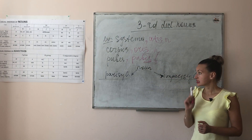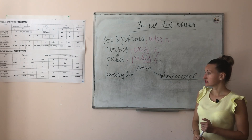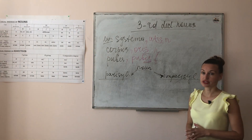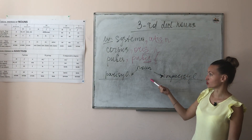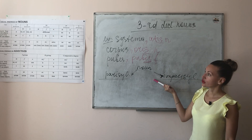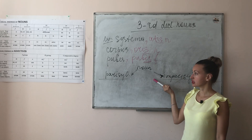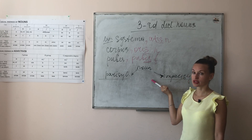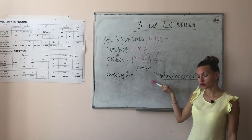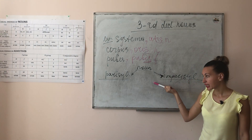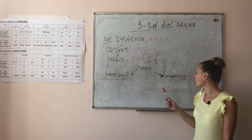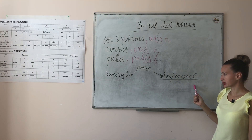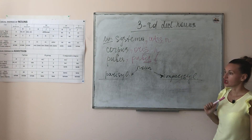The second point I would like to draw your attention to is that nouns of the third declension, according to the amount of syllables, can be parasyllabic or imparasyllabic words.